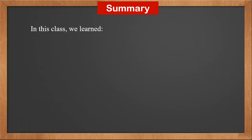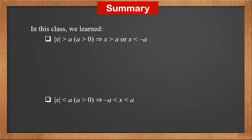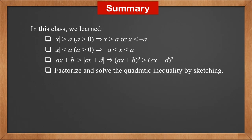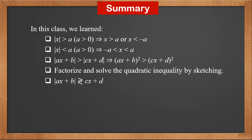In this class, we learned: if |X| is greater than A, then X is either greater than A or less than minus A. If |X| is less than A, then X is between minus A and A. For the modulus of AX plus B greater than the modulus of CX plus D, we square both sides, then factorize and solve the quadratic inequality by sketching. For the modulus of AX plus B greater or less than CX plus D, we sketch both graphs, find the intersections — which could be one or two — and find the parts that satisfy the inequality.